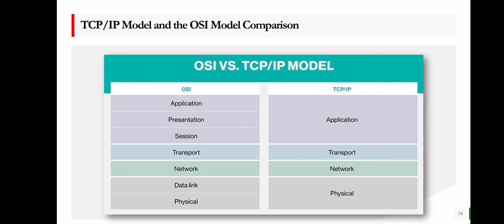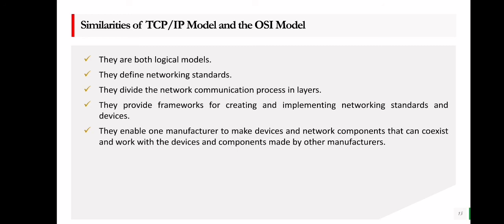Here are the similarities of the TCP/IP model and the OSI model. First, they are both logical models. Second, they define networking standards. Third, they divide the network communication process into layers. Fourth, they provide frameworks for creating and implementing networking standards in devices. Fifth, they enable one manufacturer to make devices and network components that can coexist and work with the devices and components made by other manufacturers, making it interoperable.